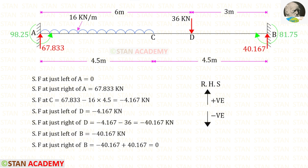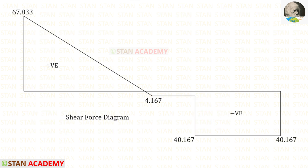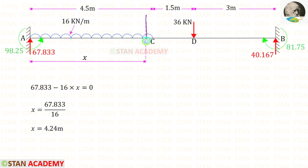Now we find the shear force values from point A using the right-hand side rule: upwards is positive and downwards is negative. Using these values we draw the shear force diagram. At one point the shear force becomes zero — this is where the maximum positive bending moment occurs. We make a section at distance x from point A where shear force = 0, and solve for x = 4.24 m.